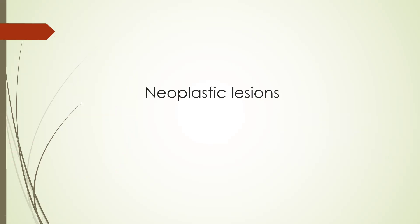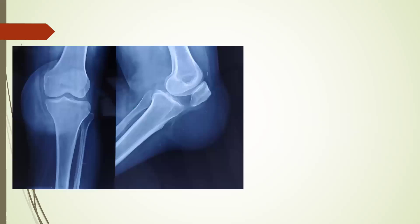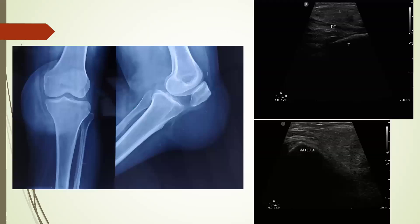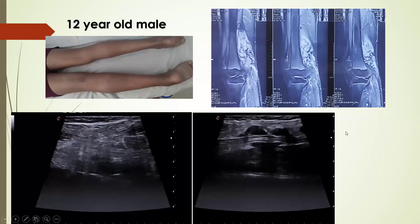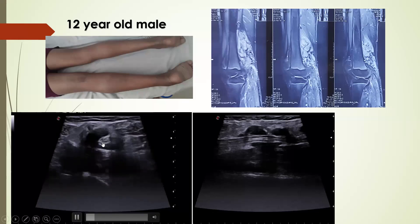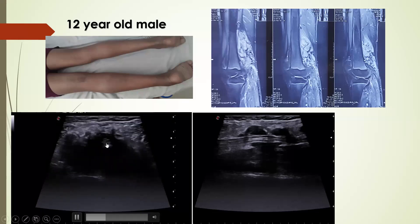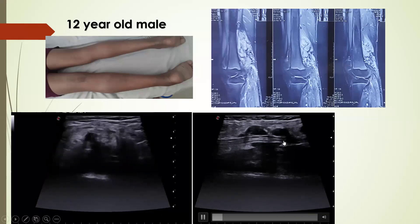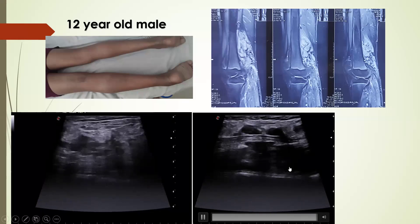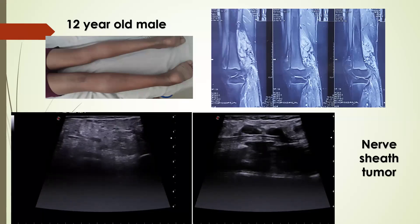Neoplastic lesions can also occur around the knee joint. In this case there is a large hyperechoic lipoma in the prepatellar region. In this 12-year-old male there is a large lesion in the posterior part of the distal femur extending to the popliteal region, encasing the sciatic and tibial nerves. On ultrasound-guided biopsy it turned out to be a nerve sheath tumor.